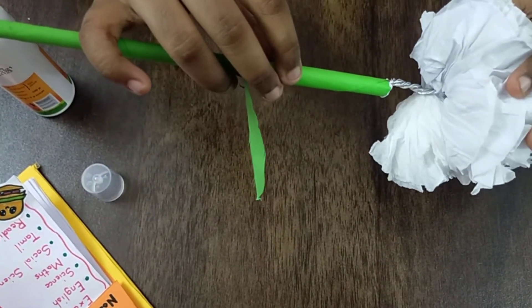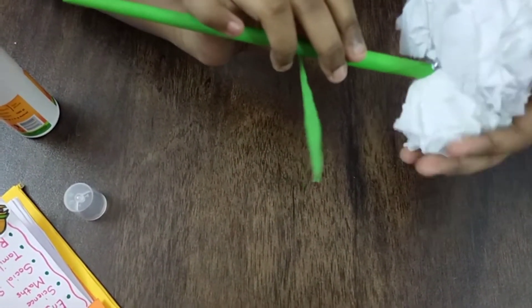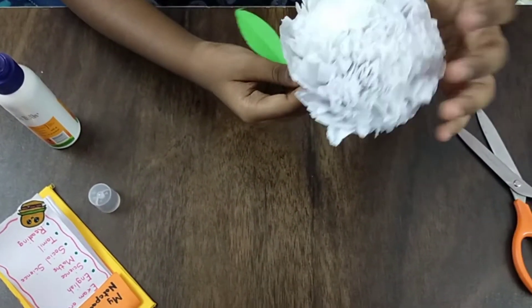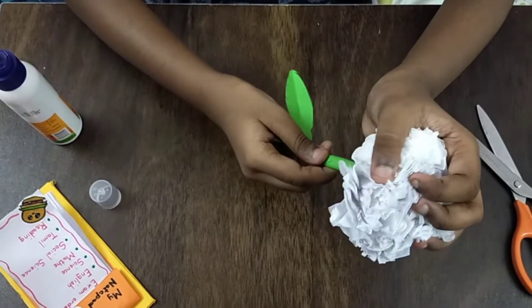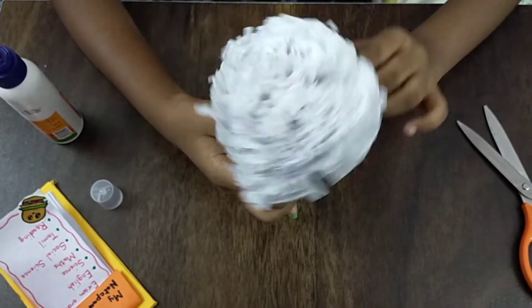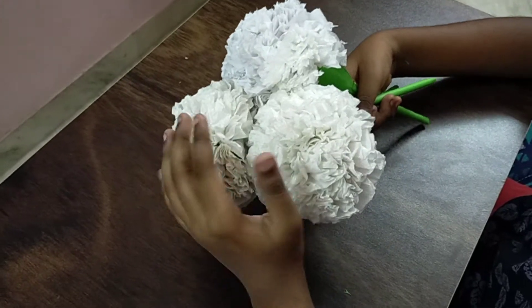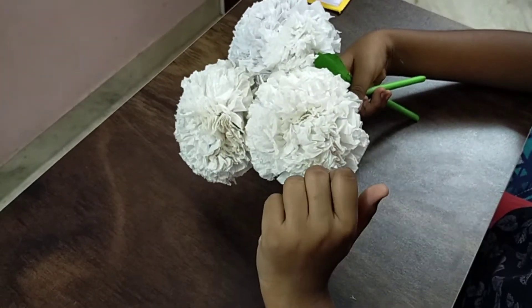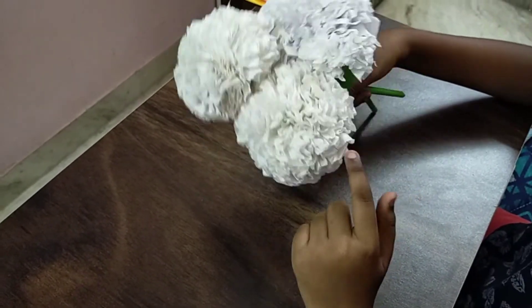Now I applied some glue on the edges of the stem and I insert the wire into the stem and stick the glue part under the flower. And your flower is ready. You can wait for the glue to dry. I love the fluffiness of the flower.